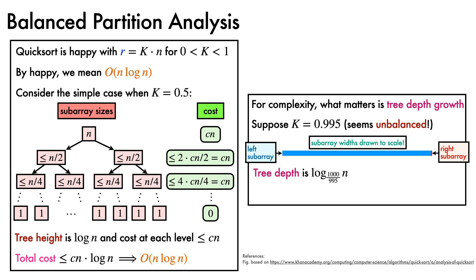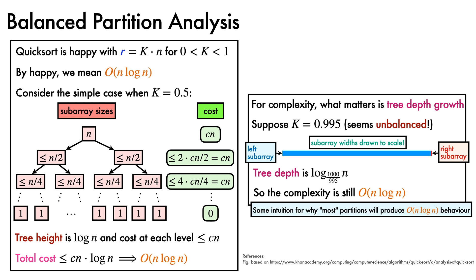Since that's just a constant factor different from log base 2 of n, we have the somewhat remarkable conclusion that this partitioning still has a complexity of n log n. This finding gives us some non-rigorous intuition for why most partitions will produce big O of n log n behaviour with quicksort.